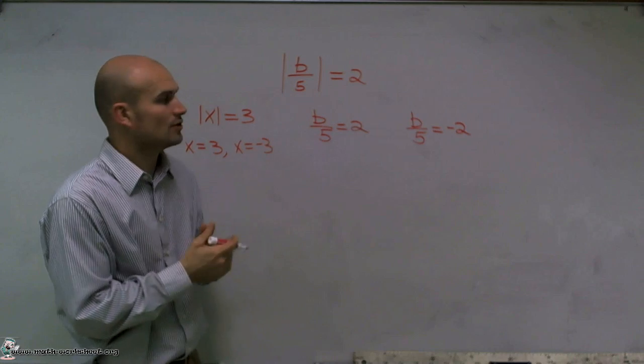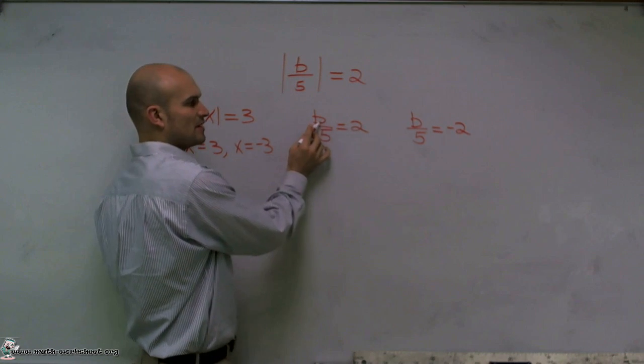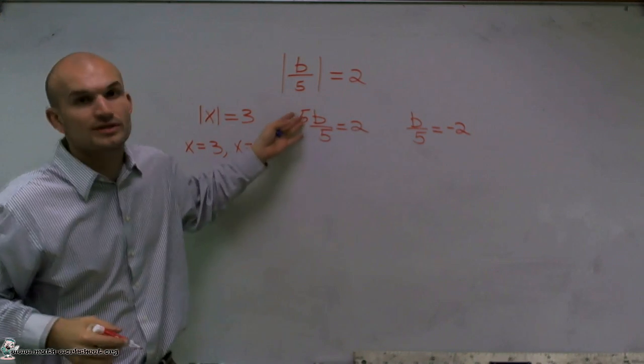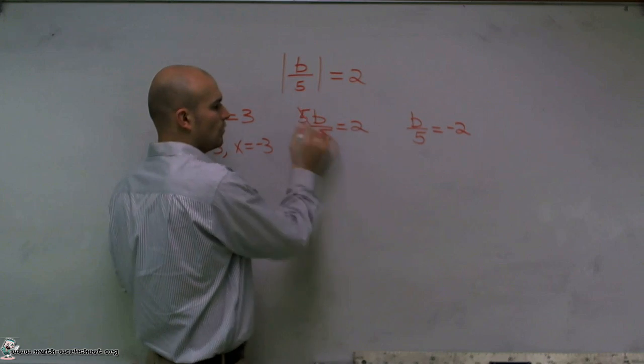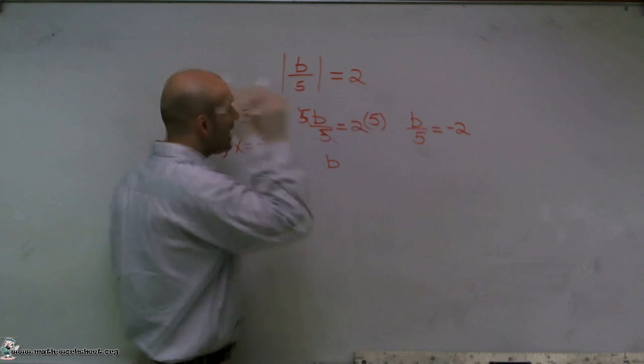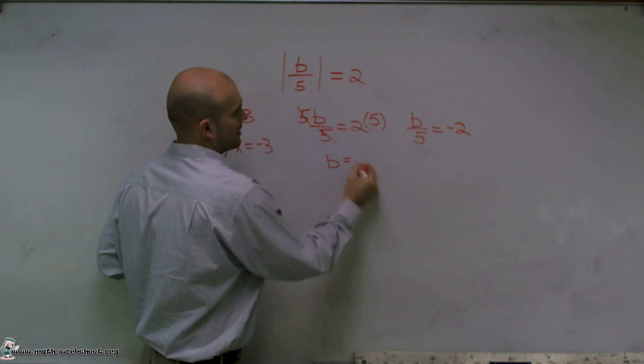Now I can just go ahead and solve for b. To undo division, so I have my variable being divided by 5, I'll multiply. When I undo division and multiplication, those cancel out to give us 1. 1 times b is just b. I need to make sure I multiply by 5 on both sides. Therefore, b equals a positive 10.